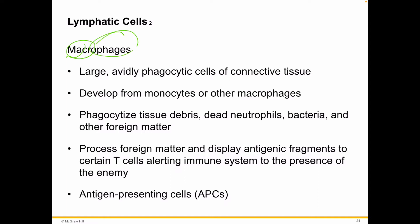Macrophages are big eaters — large, phagocytic cells that generally move through the connective tissue, which includes blood. They develop from monocytes, and sometimes from other types of macrophages. Usually they're on cleanup duty, going around picking up pieces of dead cells, debris, and entirely dead cells, eating them up and cleaning the area. They also hunt down bacteria.